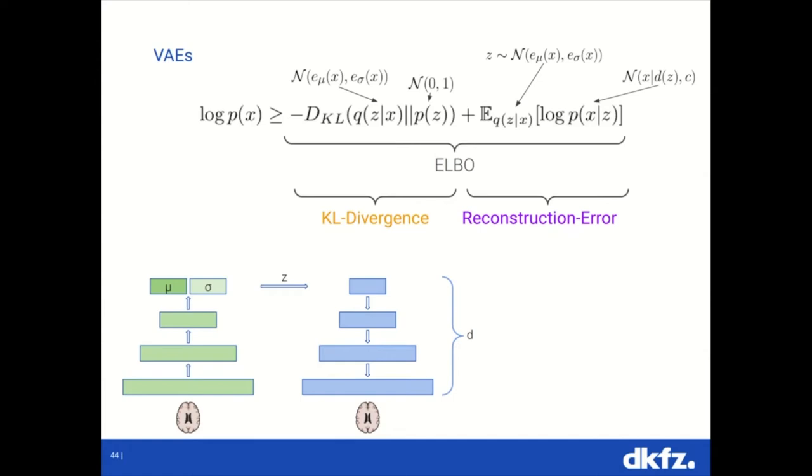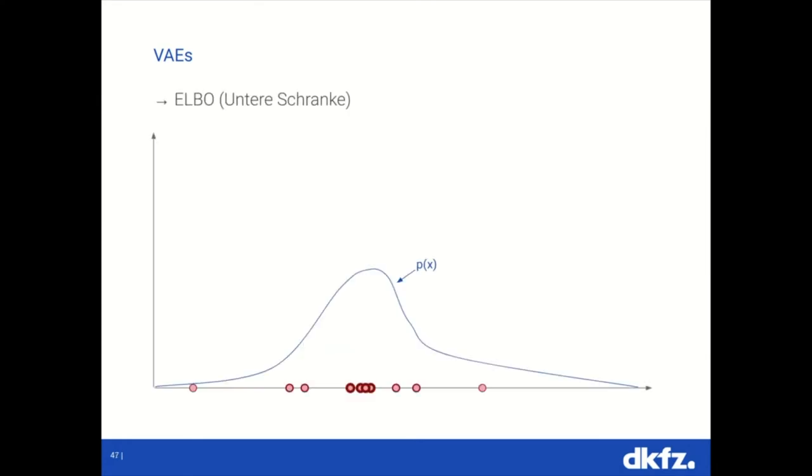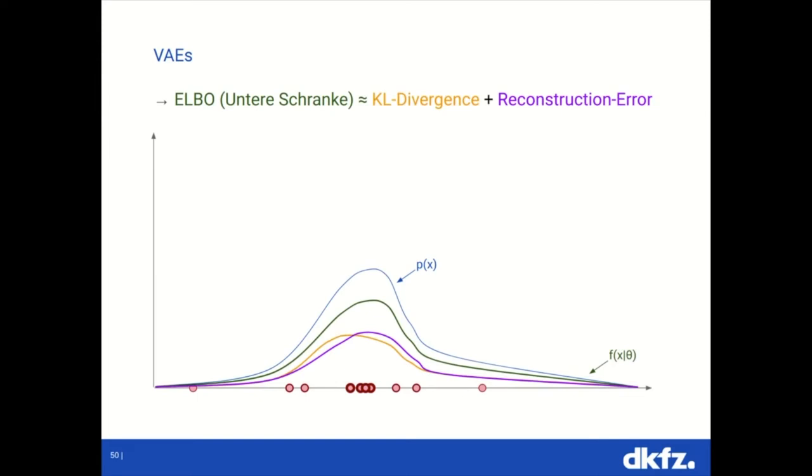And after training, how does it look now? Now, in the end, we have again our data distribution. And then, hopefully, our ELBO, or approximate ELBO, which hopefully approximates the data distribution. And it consists of two parts, the KL divergence and the reconstruction error. And in the end, we hopefully can take the approximate likelihood or the score our model gives for each data sample as an anomaly score.